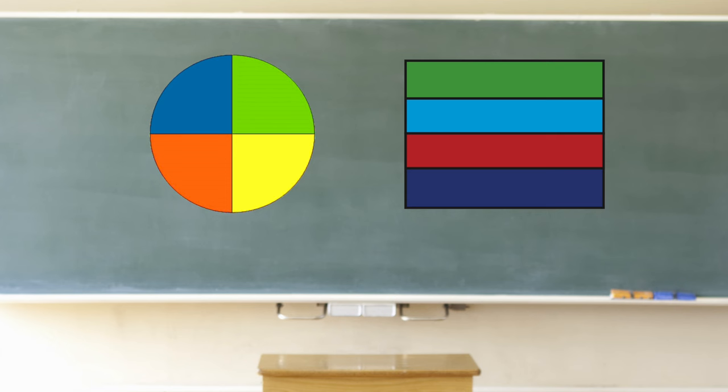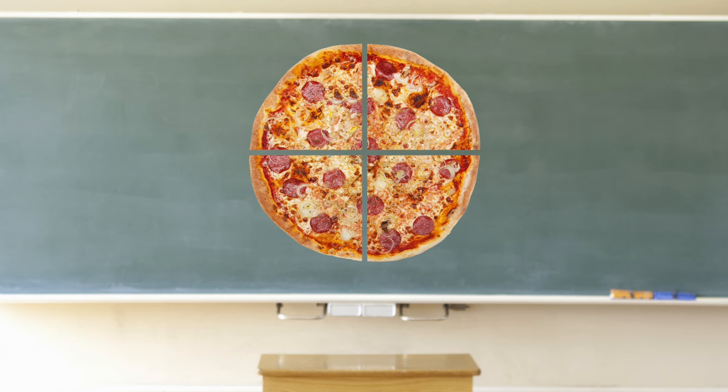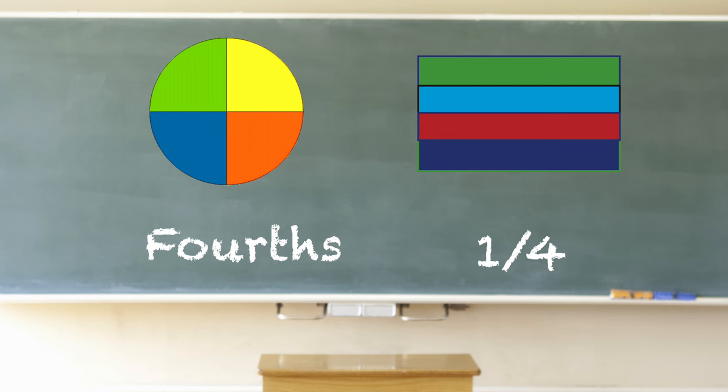A fourth of each circle and rectangle is a different color. You can also cut the pizza into quarters, or fourths, to make four equal parts. Circles and rectangles can also be cut into fourths or quarters. Fourths and quarters are used when cutting the circles and rectangles into four equal parts.